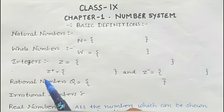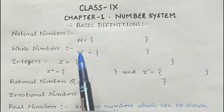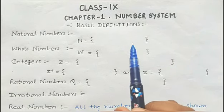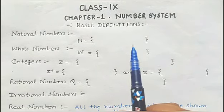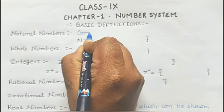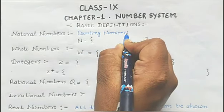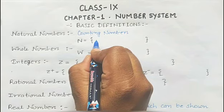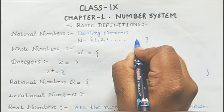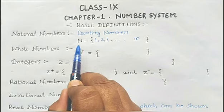Now we are coming to our first topic, that is basic definitions — the definitions that you have studied in previous classes but here you have to study once again. Our first definition is of natural numbers. Natural numbers are simply counting numbers — counting starts from 1: 1, 2, 3, and so on till positive infinity. This collection is known as counting numbers as well as natural numbers.